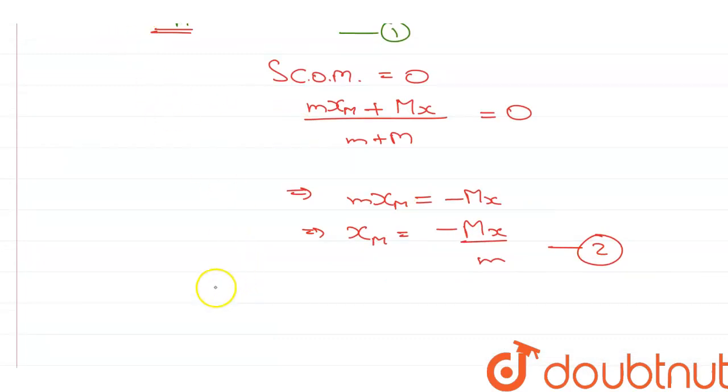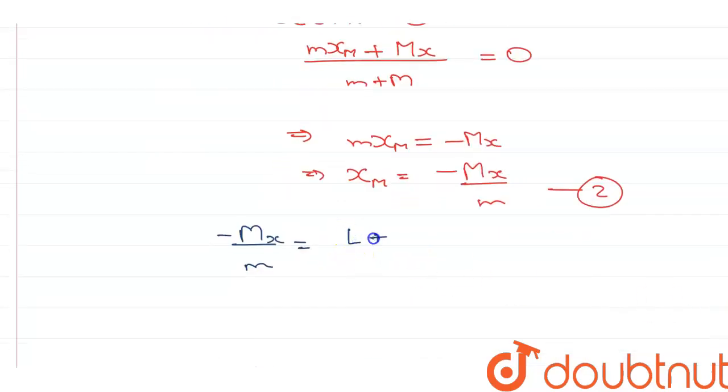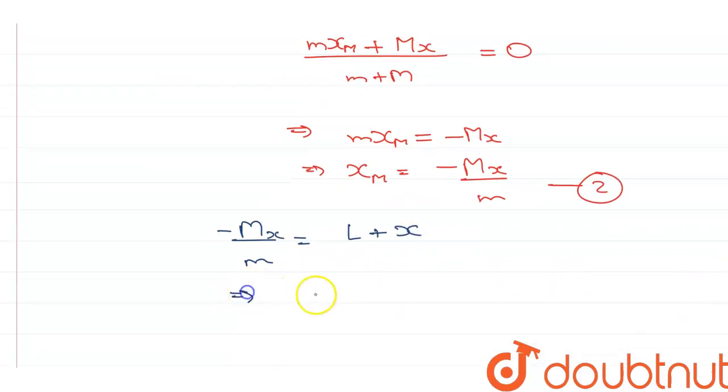Now, let's put the value from equation 2 into equation 1. So, we get minus Mx by m is equal to L plus x, which means 0 is equal to L plus x plus Mx by m.